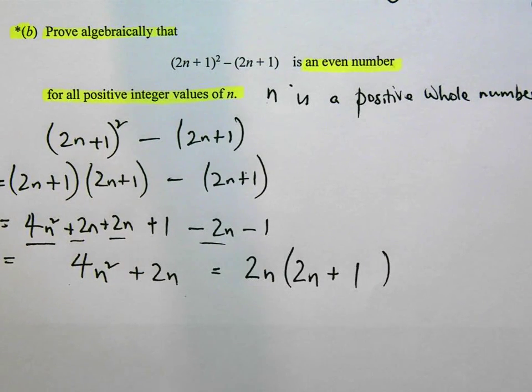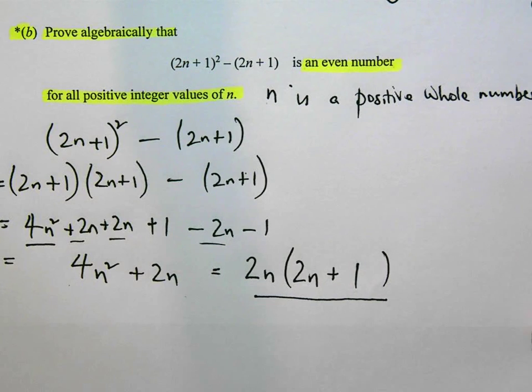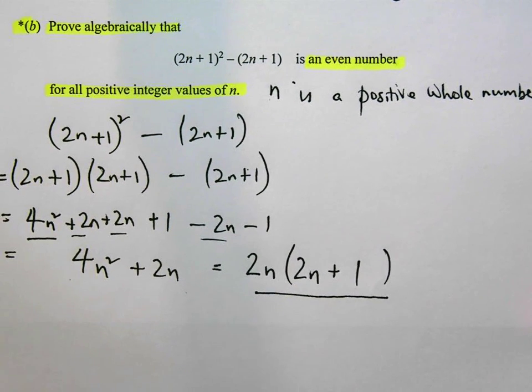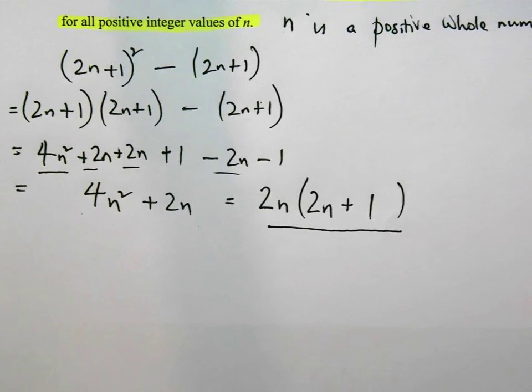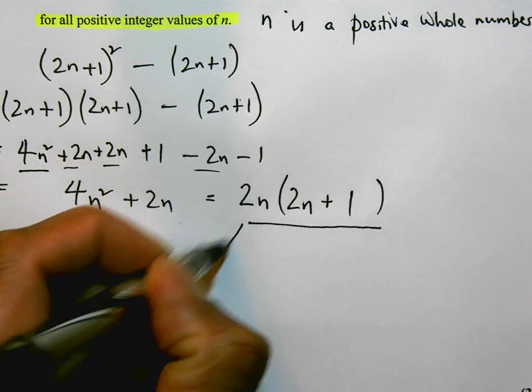Up to this point here, I've expanded this. And now I need to show that this is always going to be an even number. So remember n is a positive whole number.